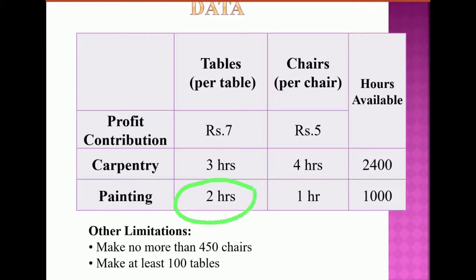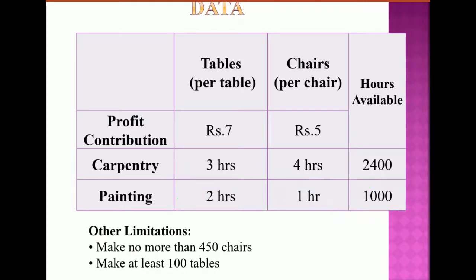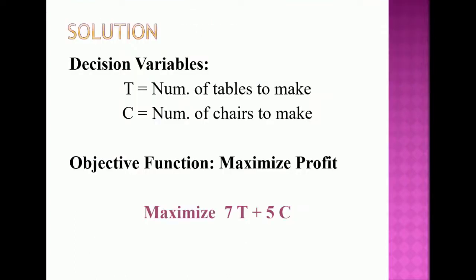For painting, it takes 2 hours to paint a table but only 1 hour to paint a chair. The painter is available for only 1,000 hours. Additional limitations are that you cannot make more than 450 chairs, and you must make at least 100 tables.